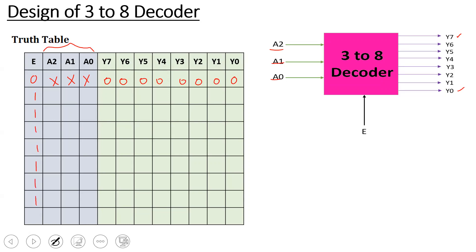With enable equal to 1, for 3 inputs we get 2 power 3 = 8 possible input combinations: 000, 001, 010, 011, 100, 101, 110, and 111.